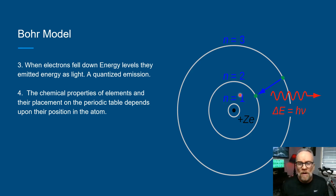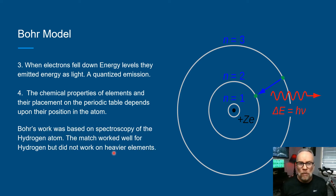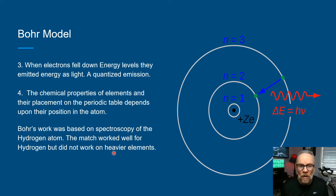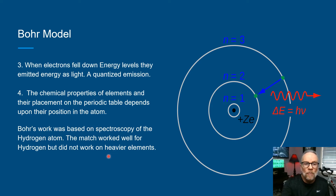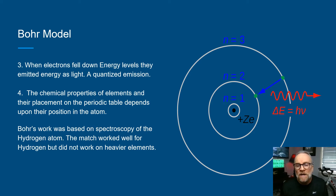The further an electron gets away from the nucleus, the higher its energy level. Bohr's work was based on spectroscopy of the hydrogen atom, and it worked really well for hydrogen — it could predict energies very well. But it didn't work on heavier elements. Once we had multiple-electron systems, the math failed, so we needed a better model.